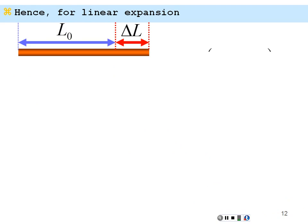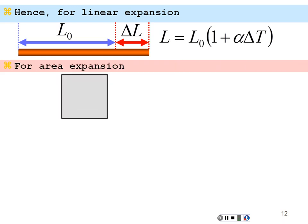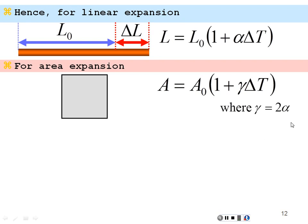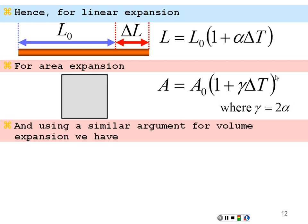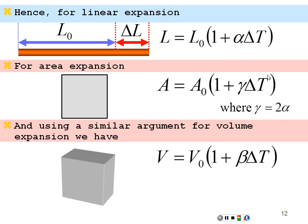For a linear expansion: length equals L0 times (1 + alpha*delta T). For area expansion: area equals A0 times (1 + gamma*delta T), where gamma equals 2*alpha. And for volume expansion — looking at three dimensions — volume equals original volume times (1 + beta*delta T), where beta equals 3*alpha. We can prove this using the same mathematics, where the small higher-order terms go to zero. So if we know alpha, we know the area expansion and volume expansion as well.